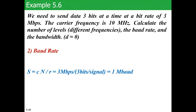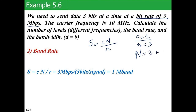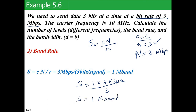The number of levels l equals 8; this is your first answer. Now we find the baud rate. Using s equals c × n / r, where c equals 1, n equals 3 Mbps, and r equals 3: s equals 1 × 3 Mbps / 3, so s equals 1 megabaud. This is your baud rate and your second answer.